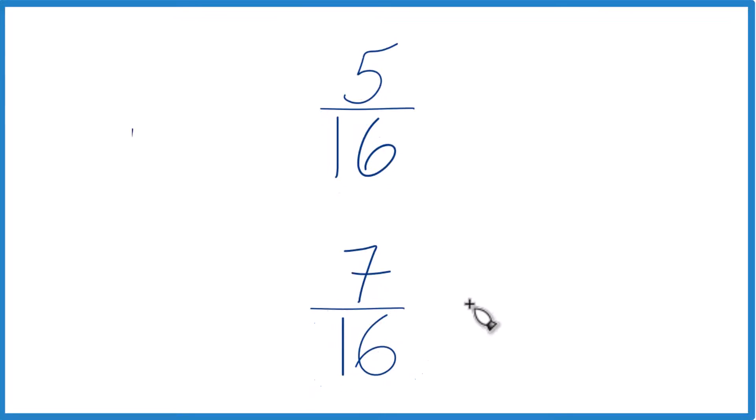When we have the same denominator, the way to think about this, imagine you have an object, same object, same size. You cut it into 16 pieces here and here. You take 5 pieces here, 7 pieces here. You're going to have more here because 7 is greater than 5. Both of them are made up of 16 pieces. That's kind of the way to think about this.